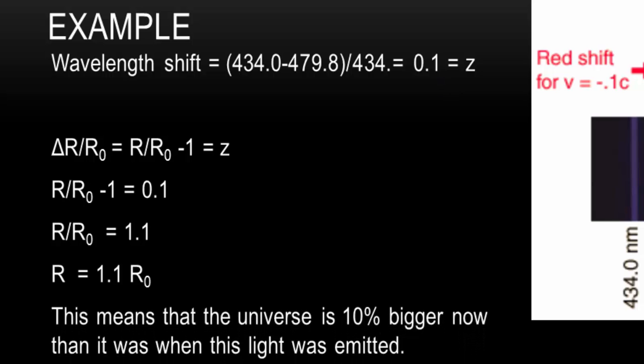So it basically tells us that the universe is 10% bigger now than it was when this light was emitted. And this is the kind of calculation that you will need to be able to do.